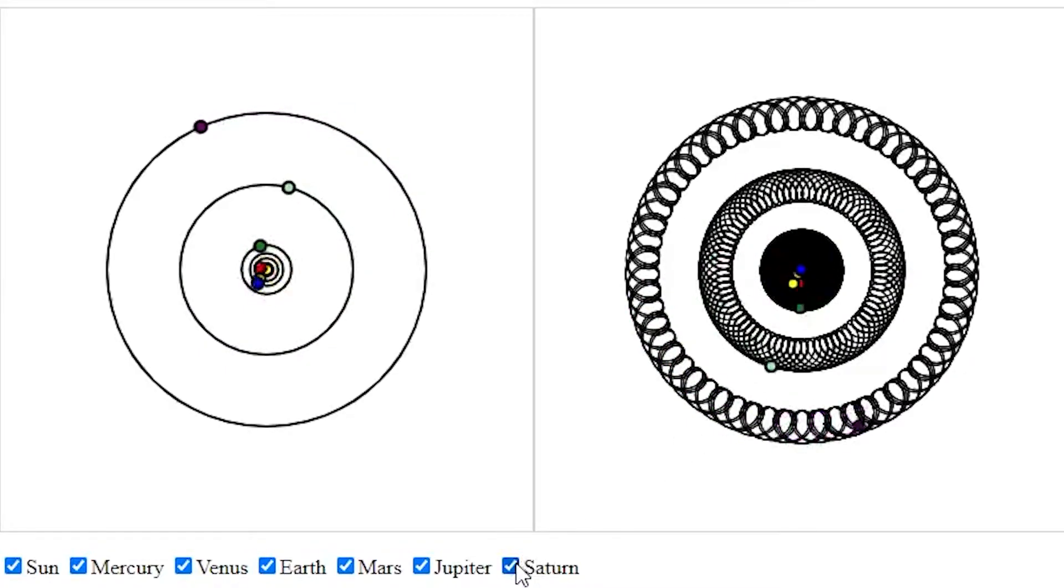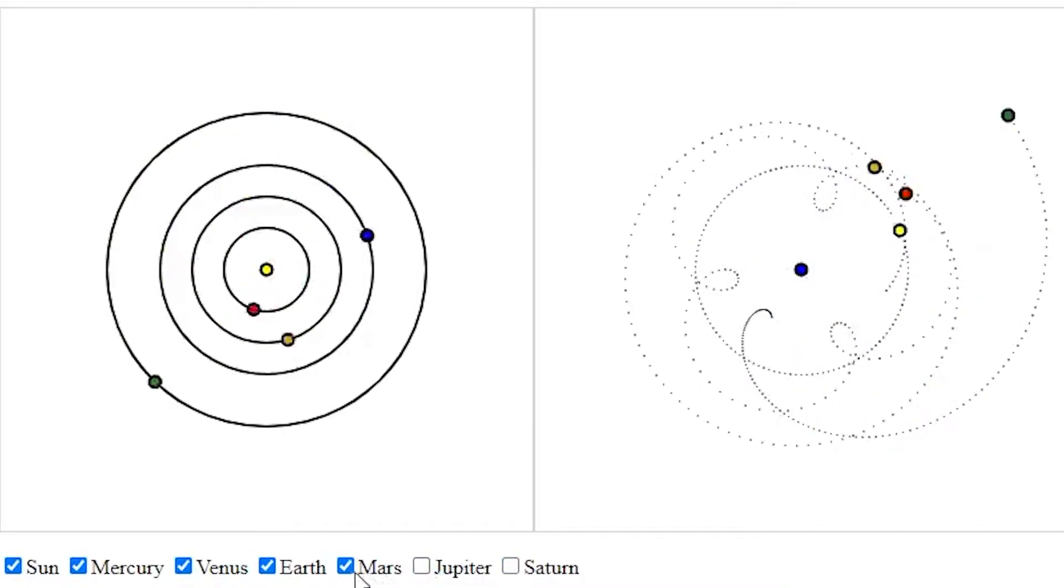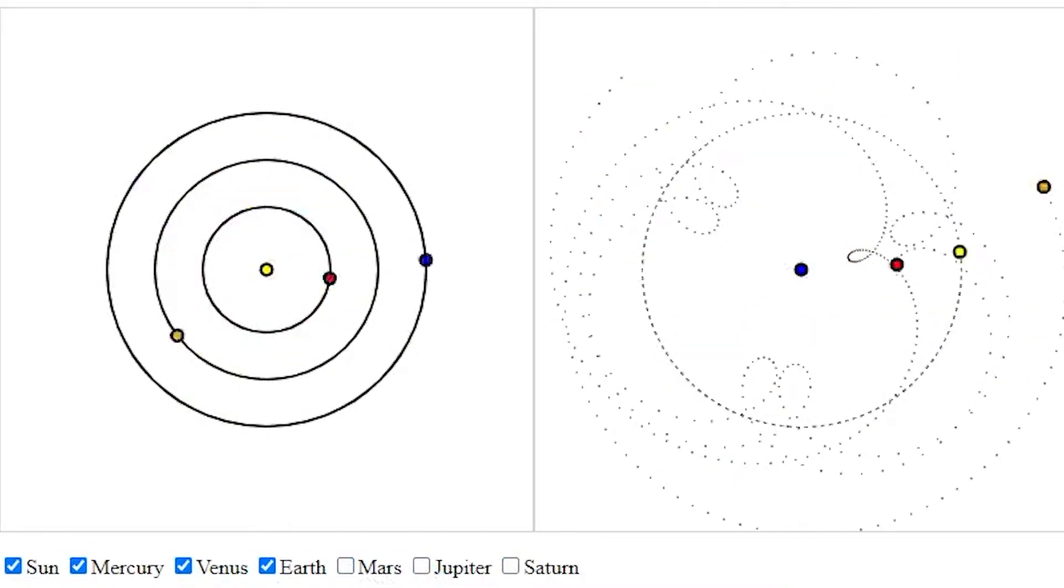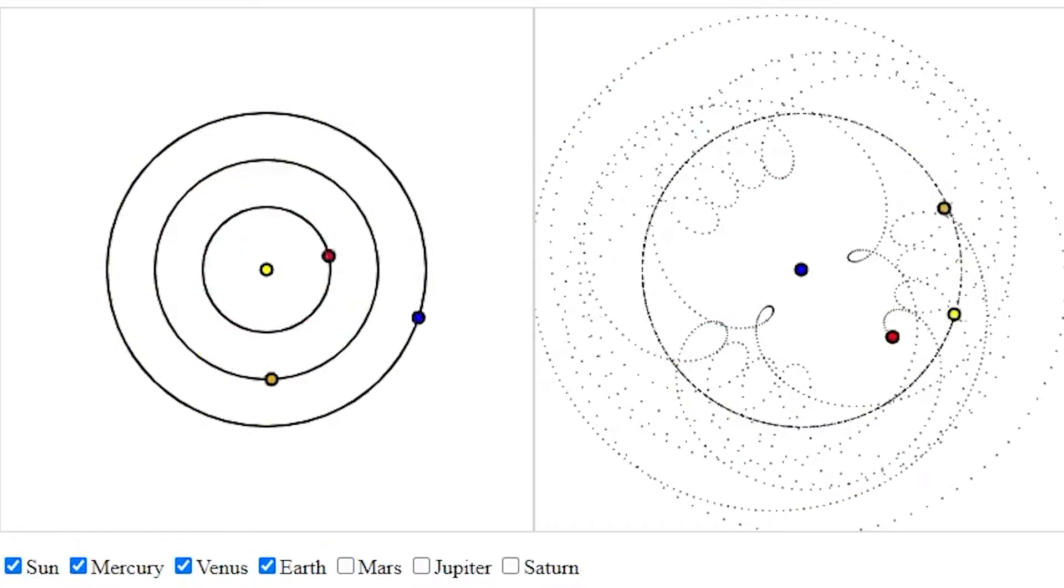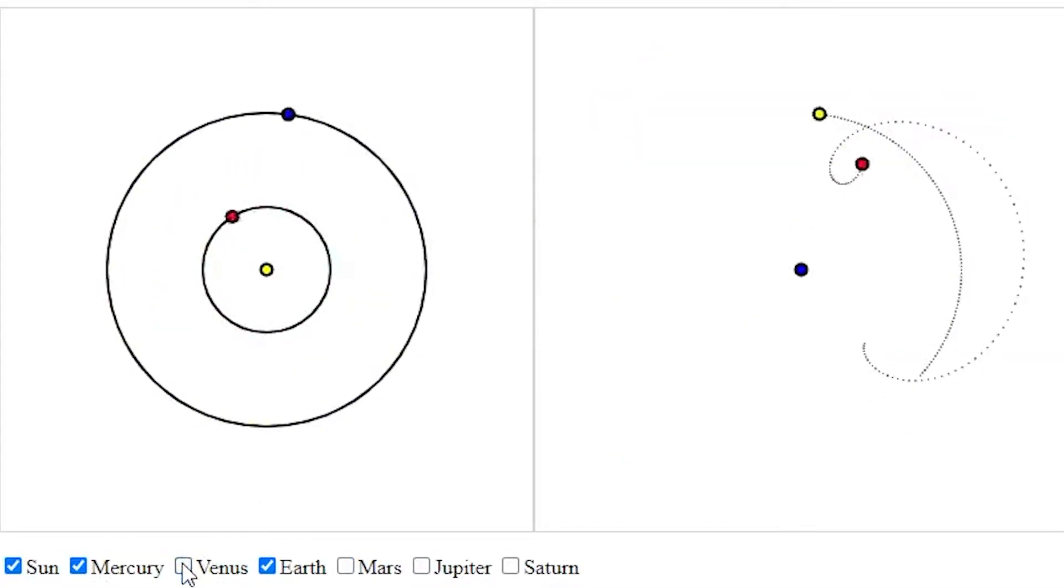Well, let's first look at the inner planets so you better understand what's going on. Let's look at Mercury first. Let's slow it down here.